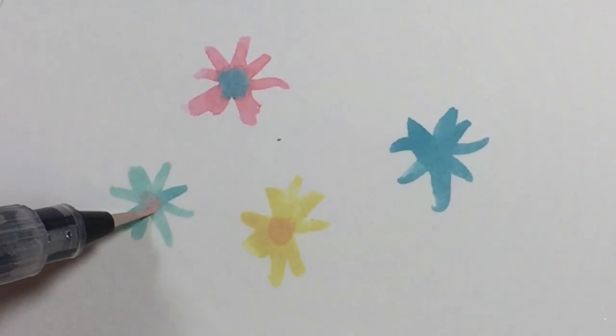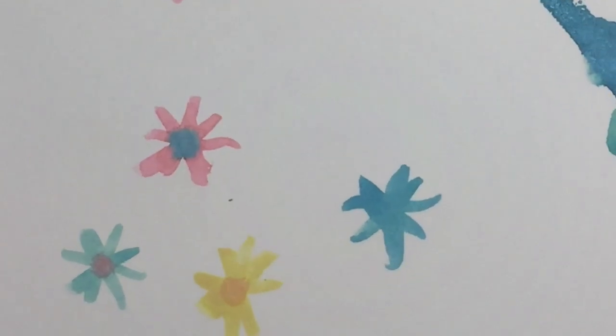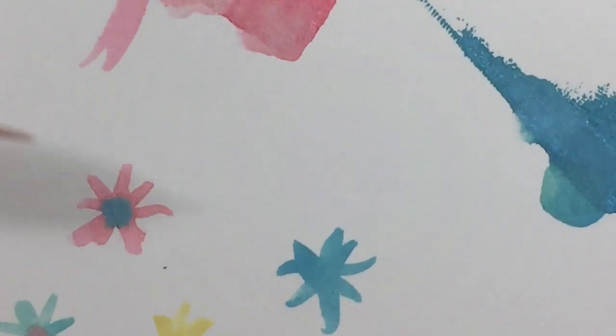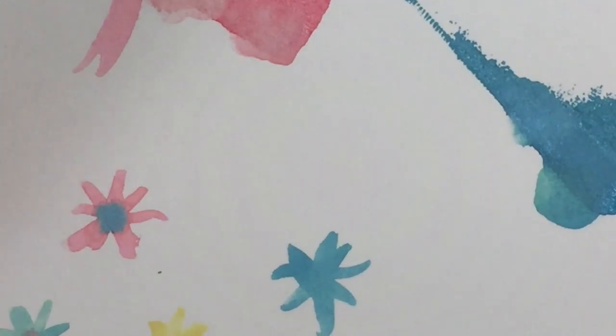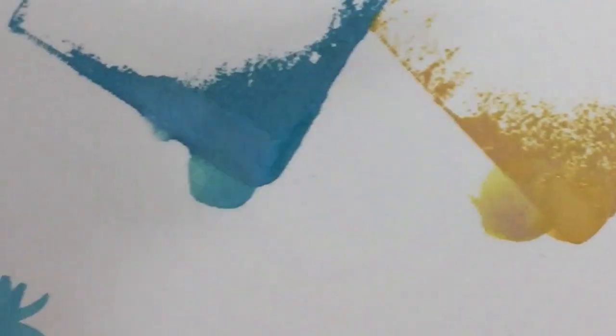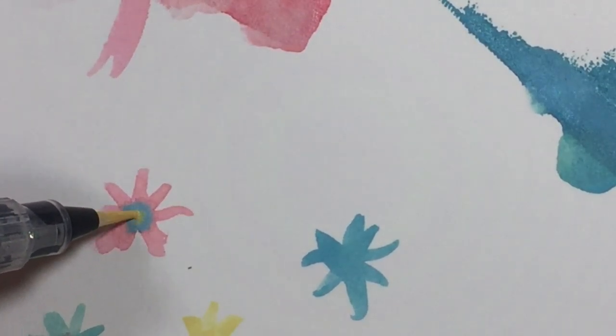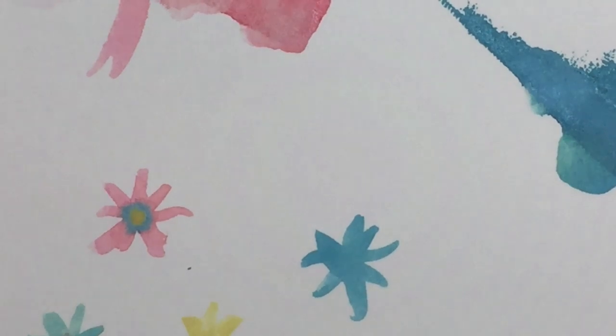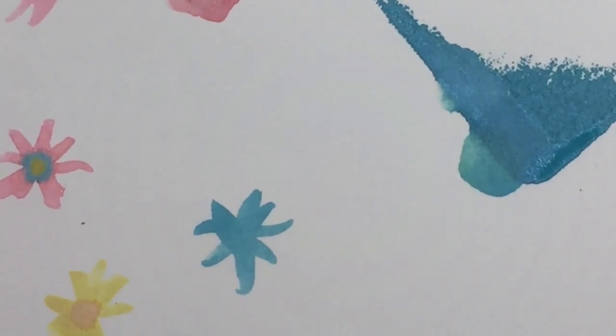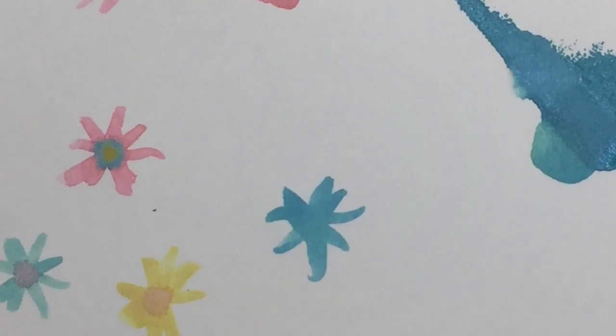Can you see what's happening here with the pink one? It feeds itself. If I go over here and pick up some yellow and come back to the pink flower, I'm going to add some more in the center and just wait. It will continue to feed that image.